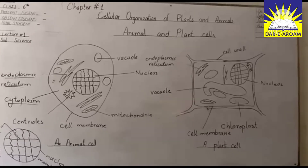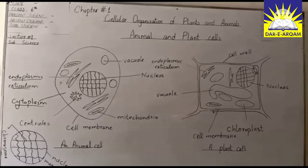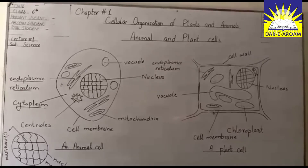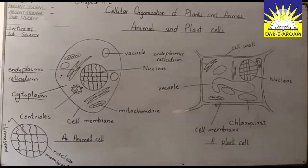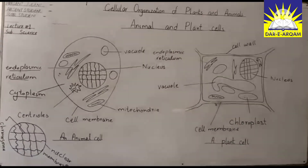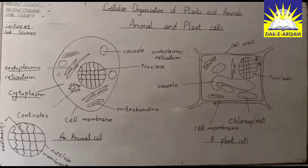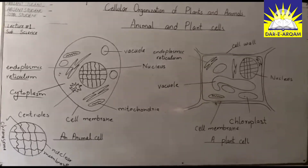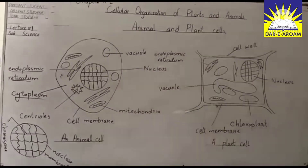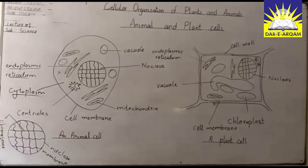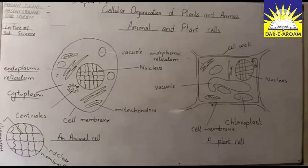Chloroplasts are present in plant cells but not in animal cells. They are present in plant cells, and that is why the color of plants is green — because of chloroplasts.